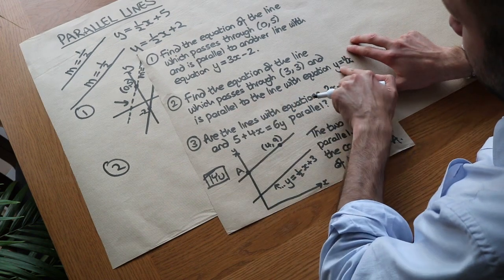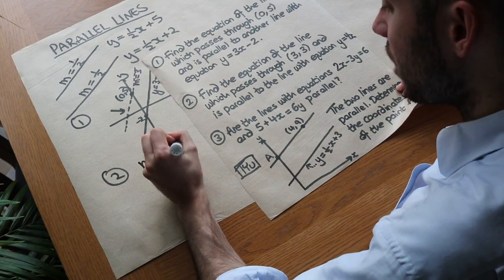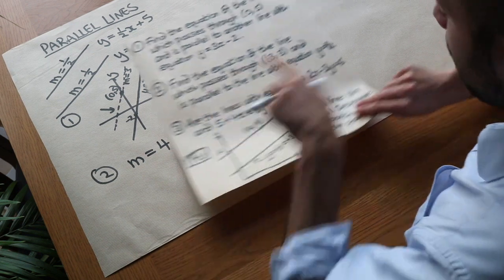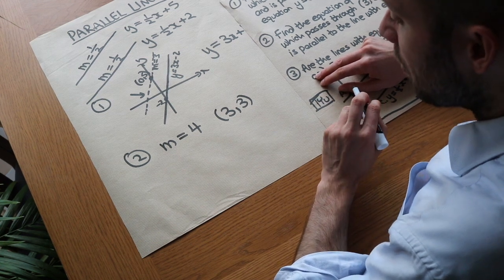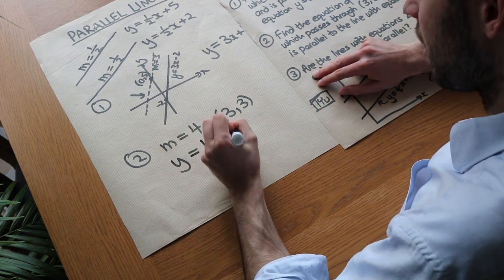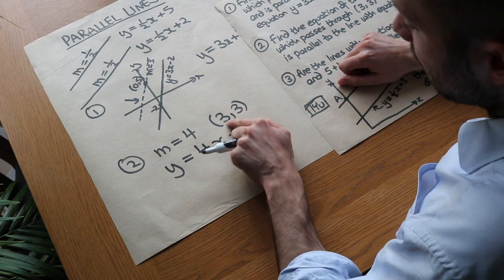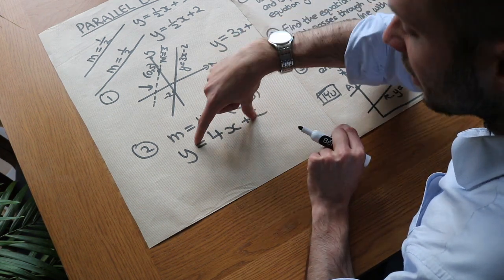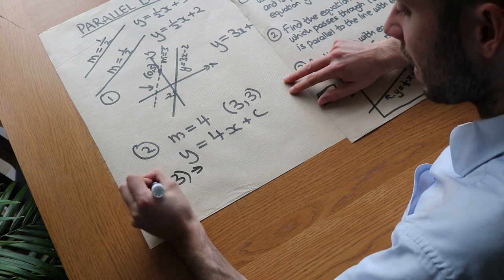If it's parallel to y equals 4x, the m value — the coefficient in front of x — is 4. So we know the gradient of our parallel line is also 4. The line we're interested in passes through (3, 3) and has gradient 4. We can use the technique from a previous video: write y equals mx plus c using the information we have so far. We know m is 4, but we don't yet know the y-intercept. We can't say the y-intercept is 3 because that x-value is not 0. Because we know the point (3, 3) lies on the line, it must satisfy the equation, so we can substitute those values in.